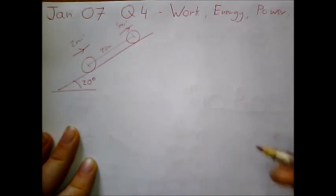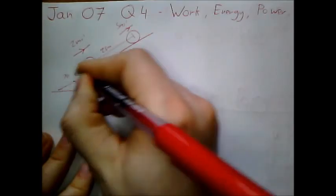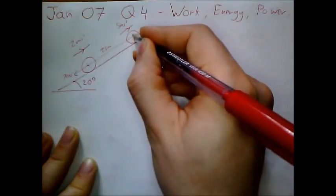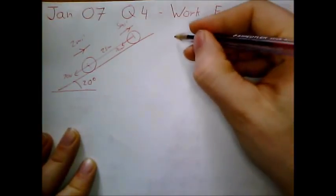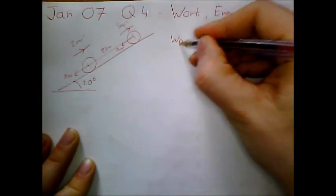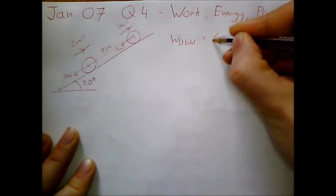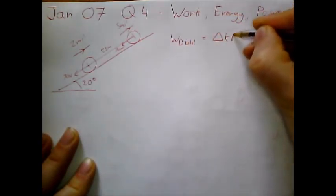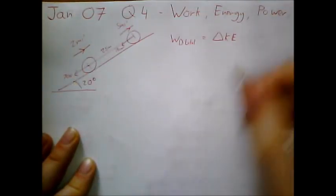And at all times, there is a resistance of 70 newtons backwards. So we know the work done of the whole system will result in the change in kinetic energy. And we have two speeds, so we can work out the work done of the whole system.